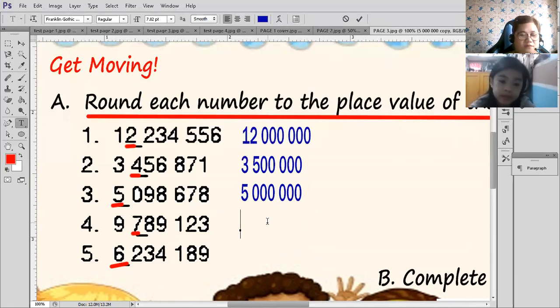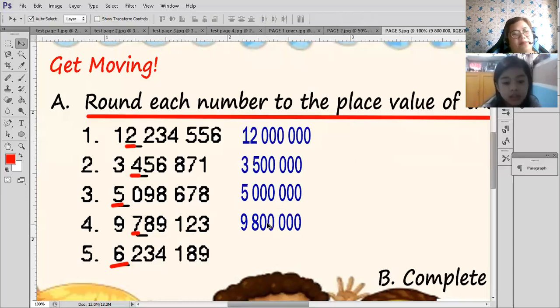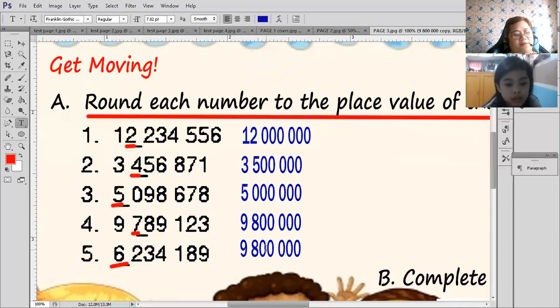How about number 4? 9,800,000. 9,800,000. Very good. How about number 5? 6,000,000. 6,000,000. Is that your final answer? Yeah.